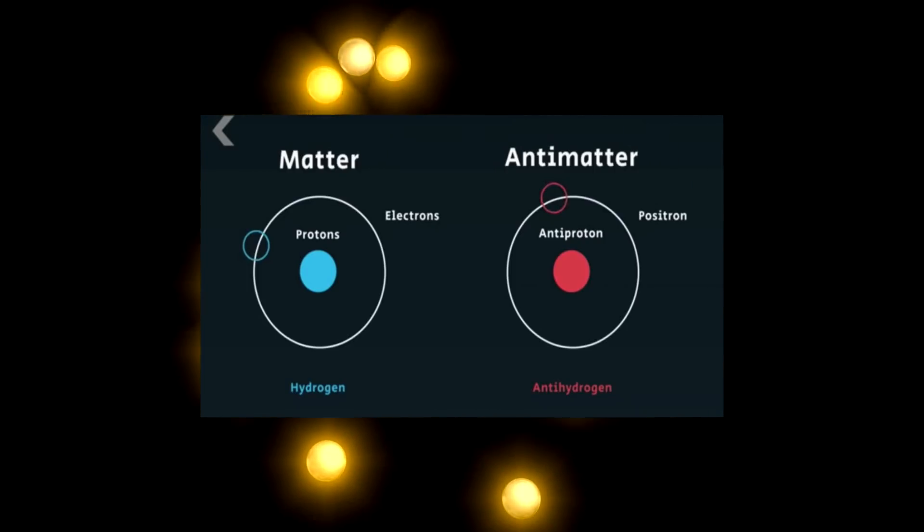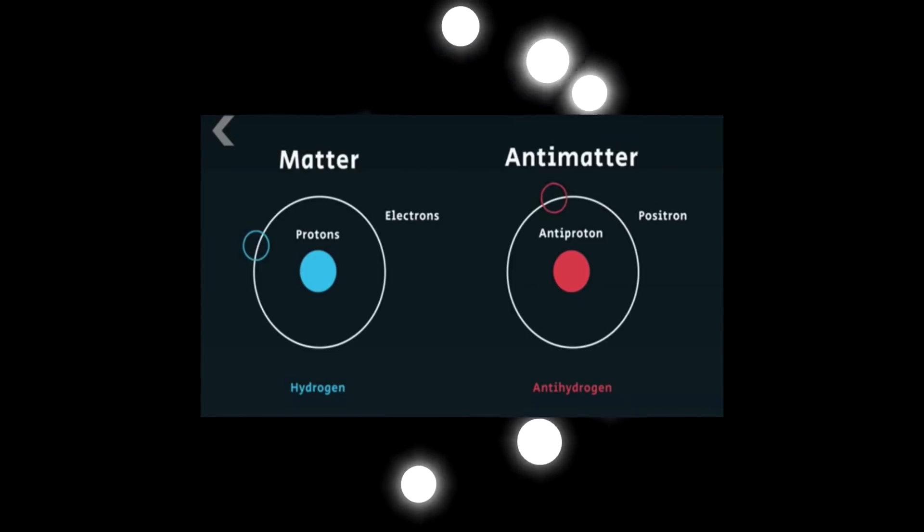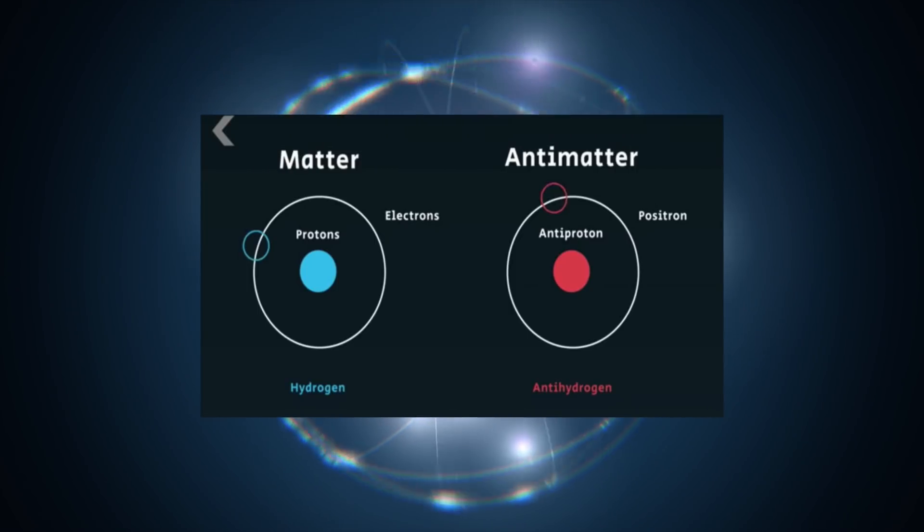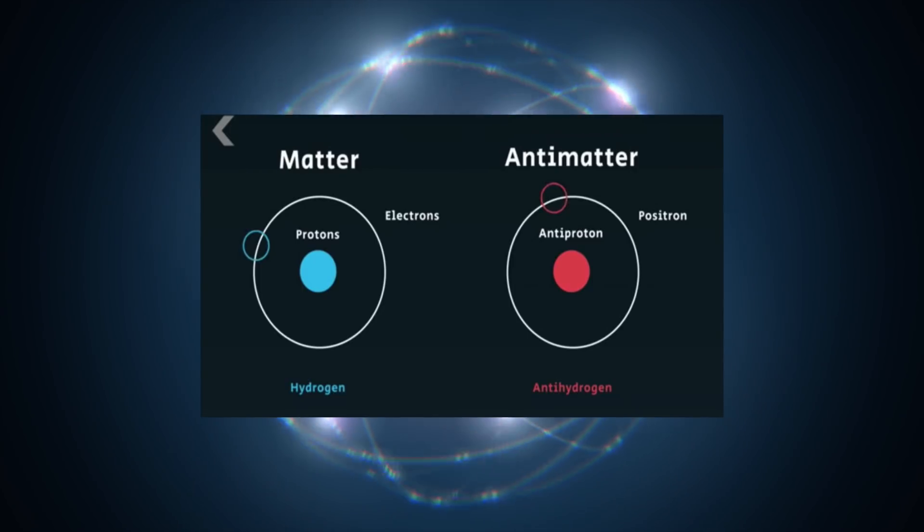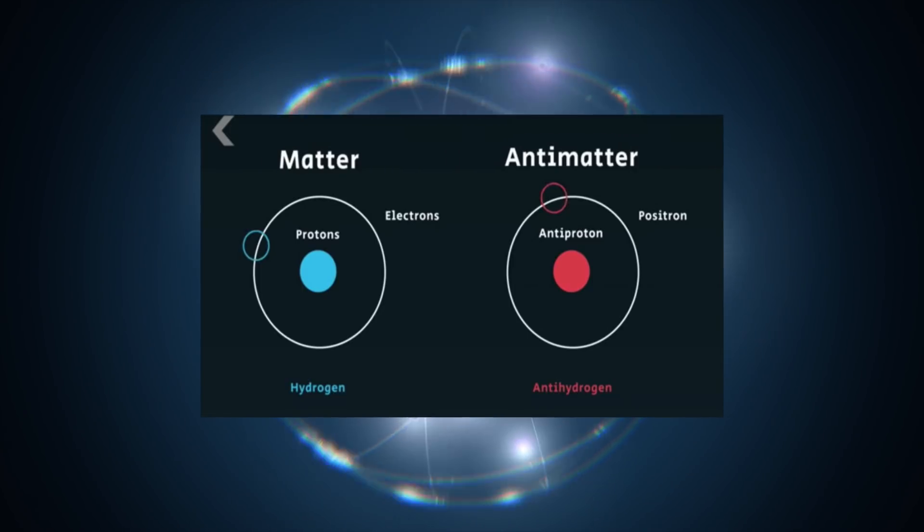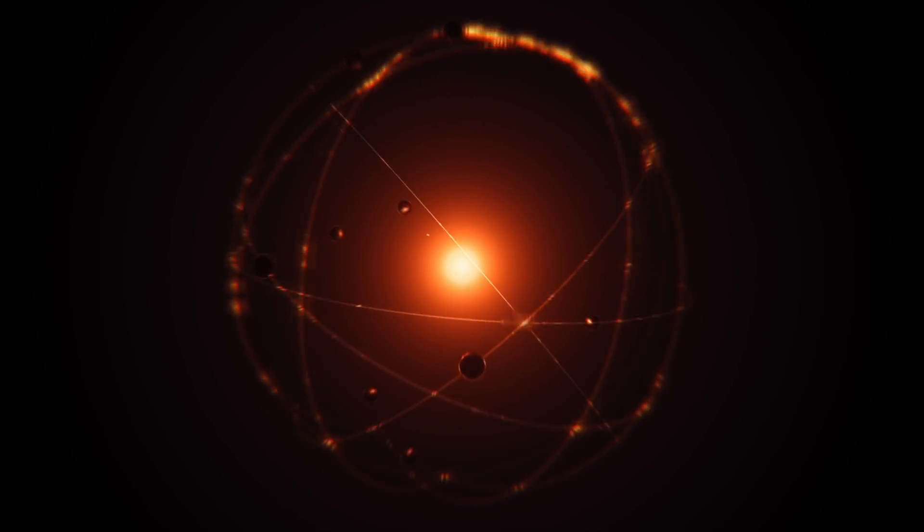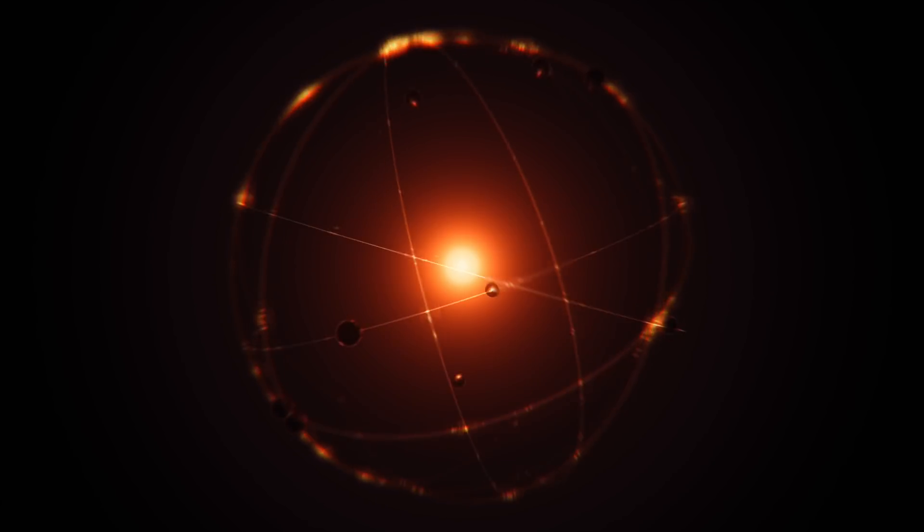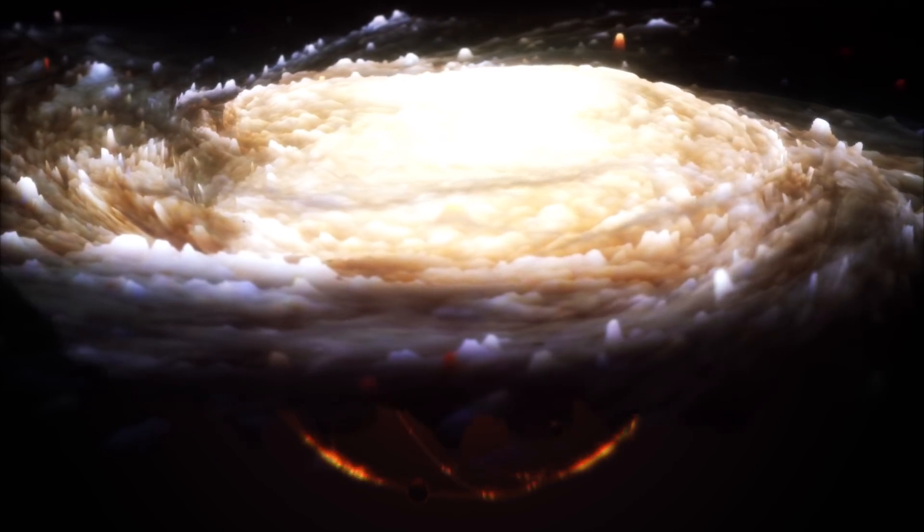It's thought that the early universe contained equal amounts of matter and antimatter. But as the universe cooled, photons no longer packed enough punch to make matter-antimatter pairs. So like an extreme game of musical chairs, many particles of matter and antimatter paired off and annihilated one another. Somehow, some excess matter survived.